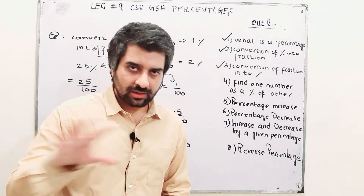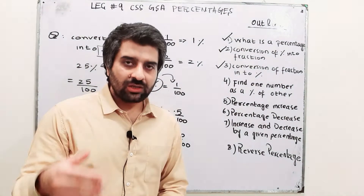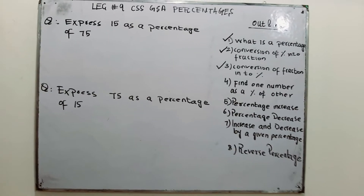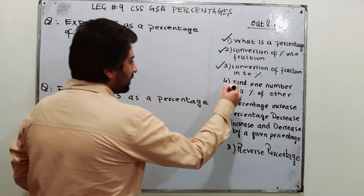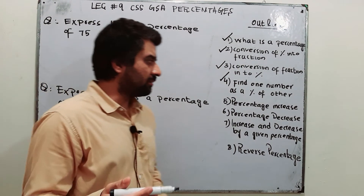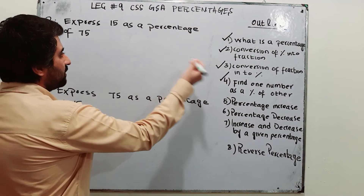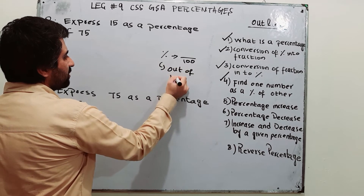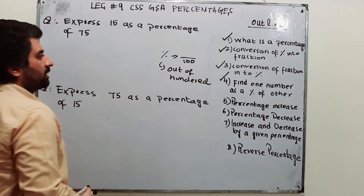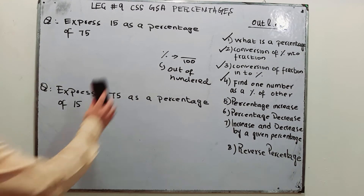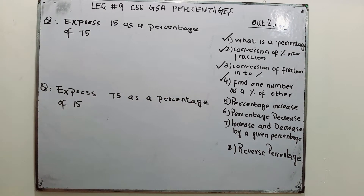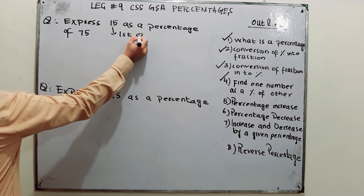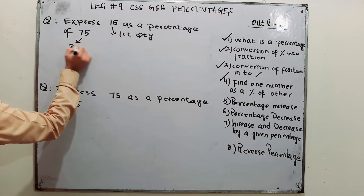The first three parts are done. Next is Part 4: express one quantity as a percentage of another quantity. The formula is: first quantity divided by second quantity, multiplied by 100. For example, express 15 as a percentage of 75. Here 15 is the first quantity and 75 is the second quantity. So it is 15 over 75 times 100. Simplifying: 75 divided by 15 is 5, so 100 over 5 equals 20 percent.